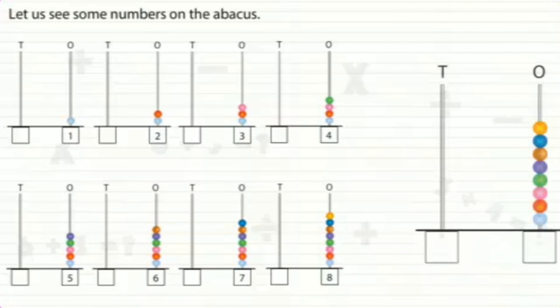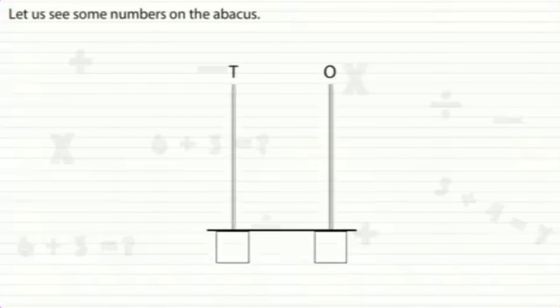For 9, we put 9 beads in the ones spike. For 10, we put 1 bead in the tens spike.